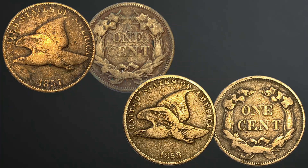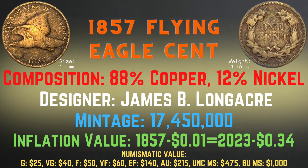Next, we will look at the characteristics of two Flying Eagle cents. Each Flying Eagle cent has a size of 19 millimeters and a weight of 4.67 grams, with a composition of 88% copper and 12% nickel, and the designer was James B. Longacre. The 1857 Flying Eagle cent has a mintage of 17,450,000 and an inflation value of 34 cents for the year 1857. Numismatic values range from $25 in good condition up to $1,000 in brilliant uncirculated mint state condition.